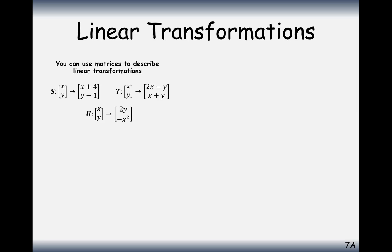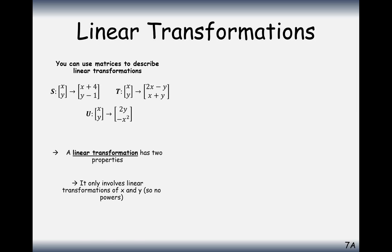There are a couple of rules that a transformation must follow to be a linear transformation — it has two properties. It can only involve linear combinations of x and y, so no powers of x. So immediately we can strike off transformation U. Also, the origin (0, 0) must not be moved by the transformation.